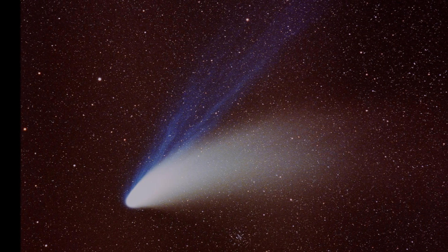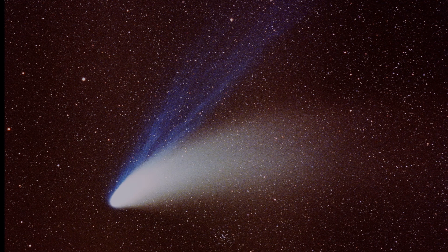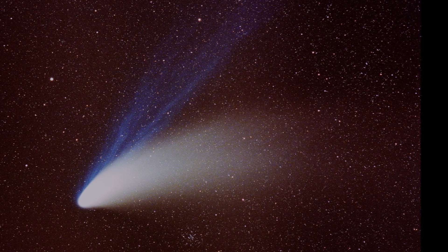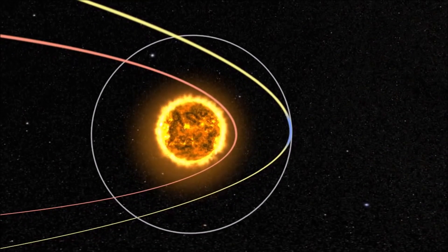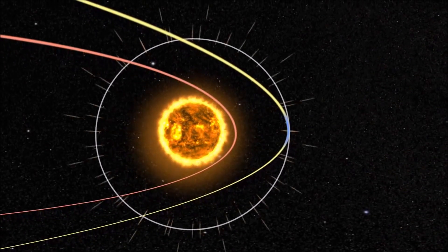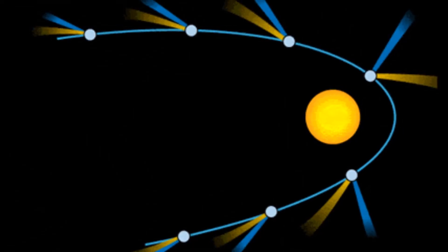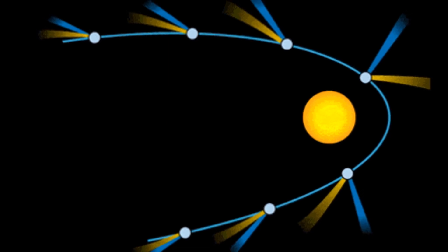Comets generally have two different tails. One is made of gases, the other is made of dust. These two tails usually point in different directions. The gas tail is blown directly away from the sun by the solar wind. No matter which way the comet is traveling, this gas tail will be pointing away from the sun.